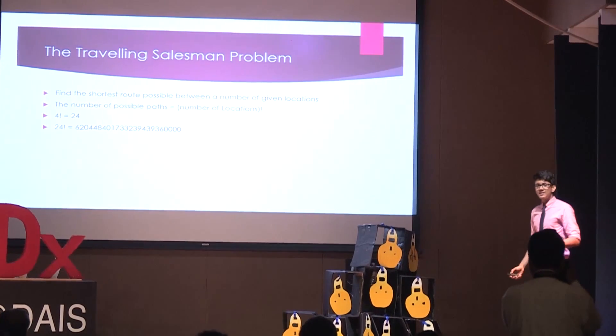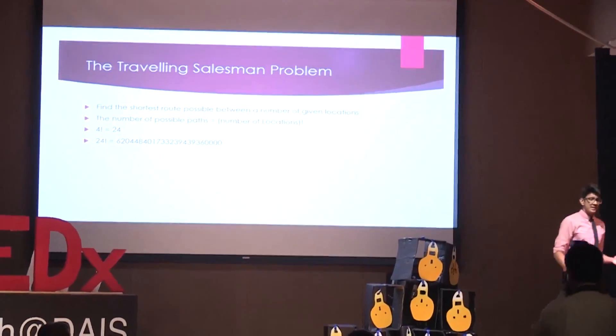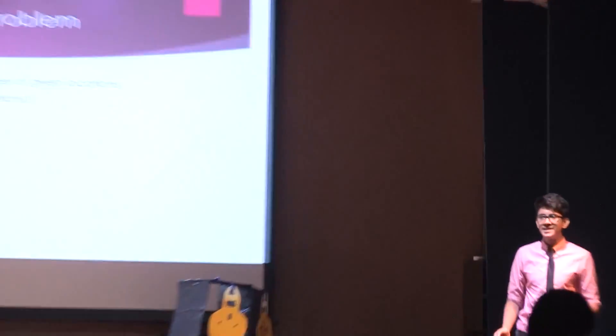Now I come to the traveling salesman problem. There's a really famous and extremely complicated problem in theoretical computer science called the traveling salesman problem. The aim of this problem is to find the shortest possible route between a number of given destinations. The most obvious approach would be the brute force approach, which is basically to calculate each possible permutation of every route that you can take. This is a rather good algorithm for a small number of destinations, as the total number of calculations required is given by the number of destinations factorial.